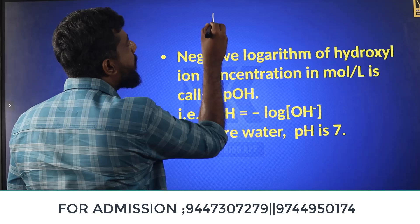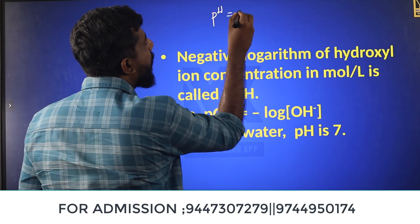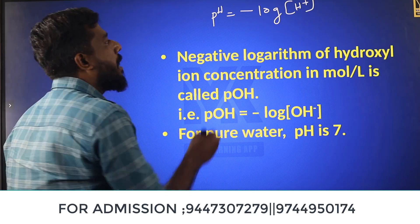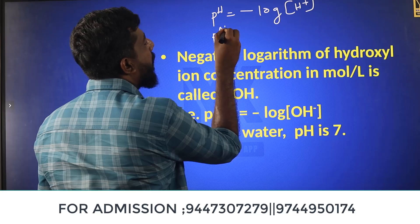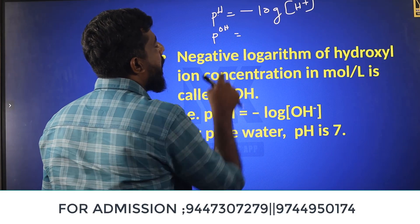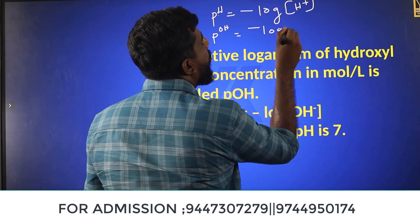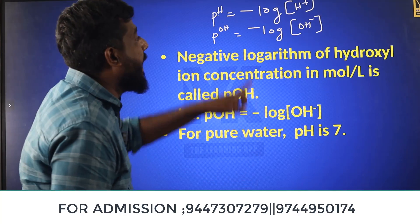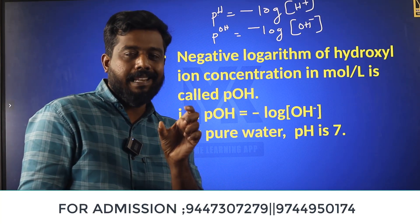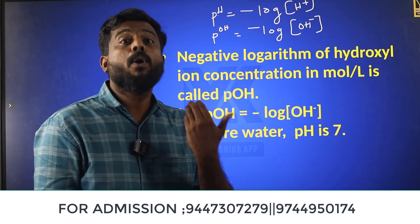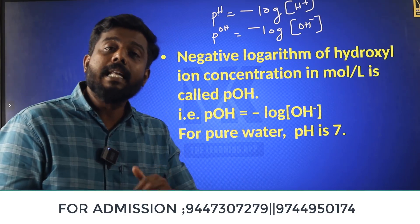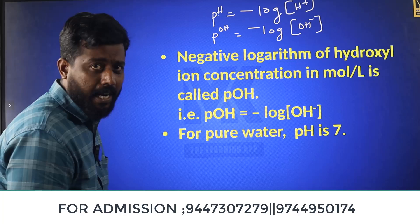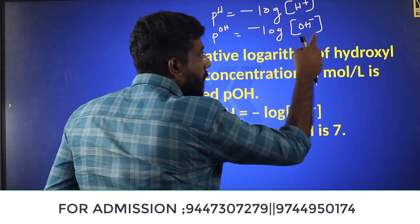If we define the pH, we define it as the negative log of H⁺ ion. That means pH equals the negative log of H⁺ — pH is the negative log of H⁺ ion.